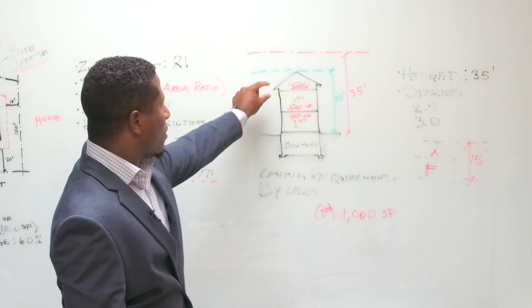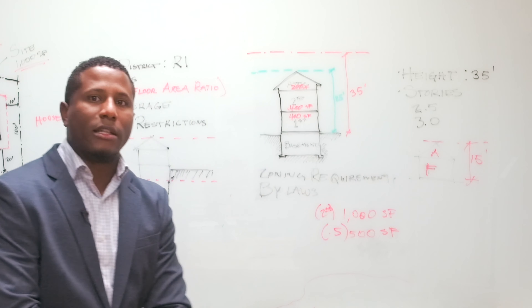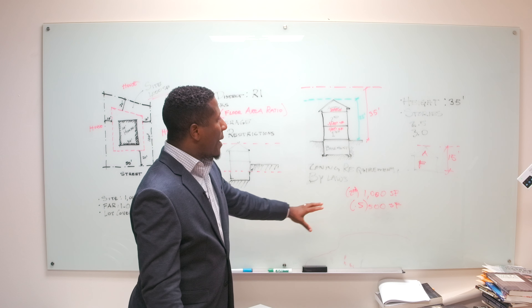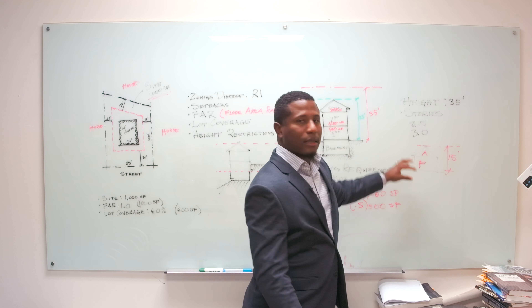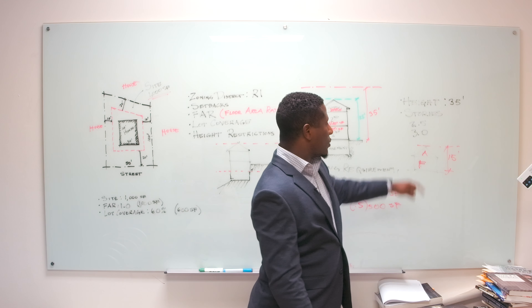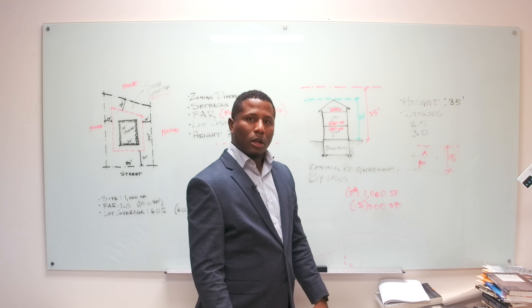It's important for you to understand the height relationship and what your requirements are in terms of stories and height. Going back to this example, if your house is a single home with 1.5 stories, that means you can easily go into another story and add an attic similar to what we're showing in this diagram. Height and stories correlate to each other. Some cities specifically say 35 feet but don't specify the number of stories.